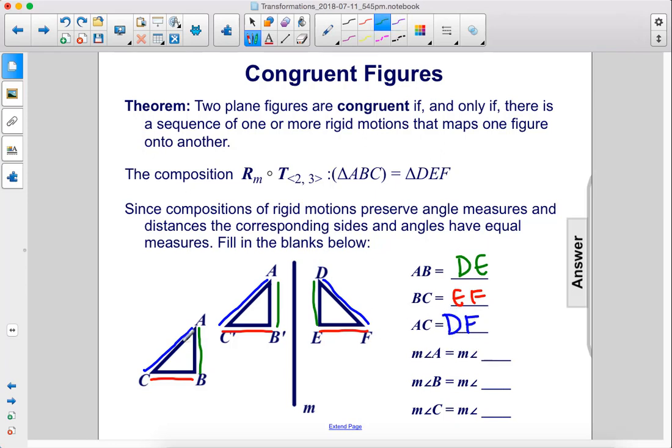The measure of angle A is going to be equal to the measure of angle D. The measure of angle B is equal to the measure of angle E once you reflect it across. And then the measure of angle C equals the measure of angle F.